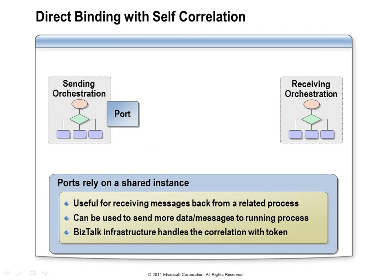The second direct binding option uses something called self-correlation. The name stems from the fact that we're going to rely on an orchestration port to handle the correlation for us — the port itself takes care of all the correlation details. You might recall that the start orchestration shape implements an asynchronous call, which won't allow us to receive parameter values back. This direct binding option provides a way to implement two-way communication between orchestrations executing in parallel.